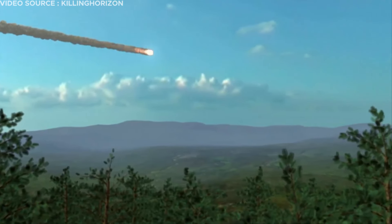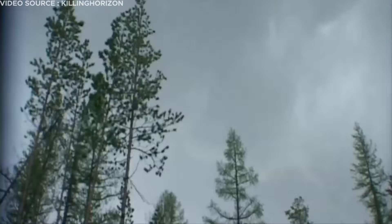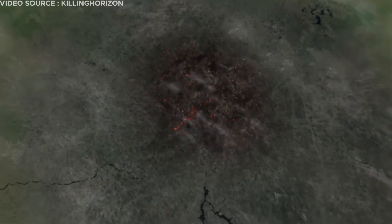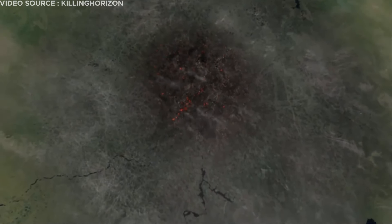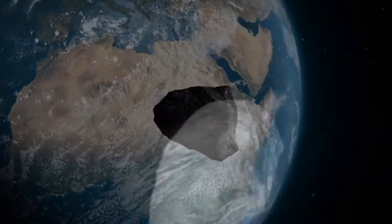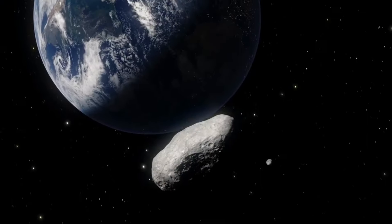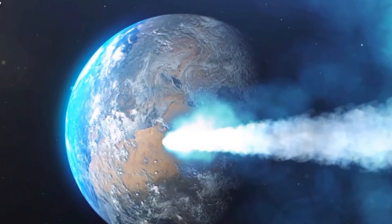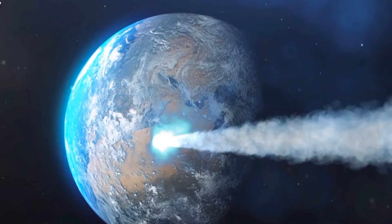The impact of the 1908 asteroid resulted in the flattening of approximately 80 million trees, covering an area of 2,150 square kilometers of forest. On the other hand, in 2013, an asteroid almost the size of a tennis court entered Earth's atmosphere at a staggering speed of nearly 70,000 kilometers per hour, racing from southeast to northwest.